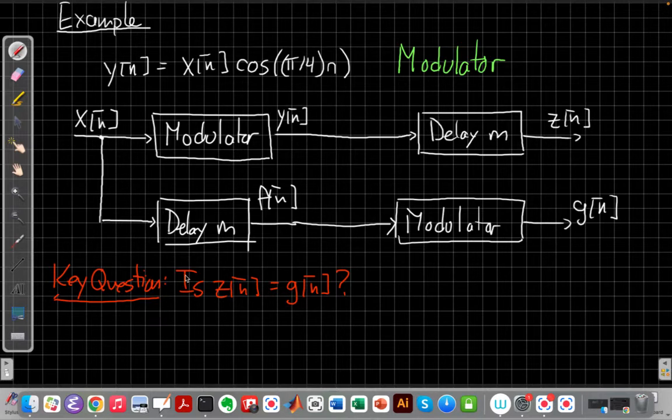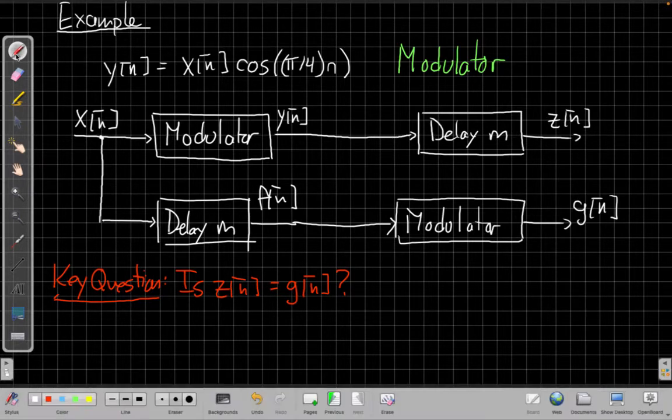So let's see how that works out. Let's start with the top branch. We'd say well if I sort of work backwards here if z[n] is y[n] delayed by m samples, right I could write this saying well z[n] will be y[n-m].